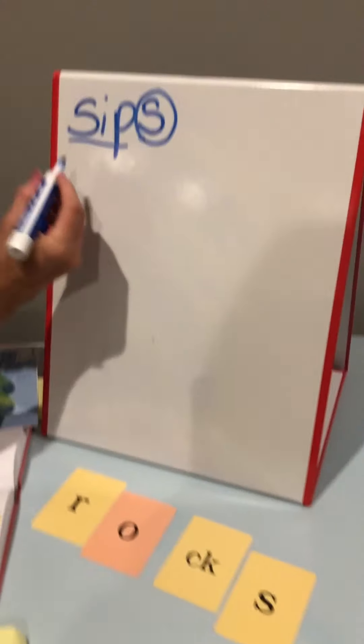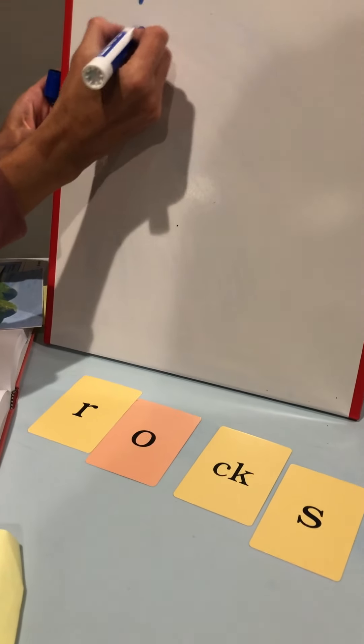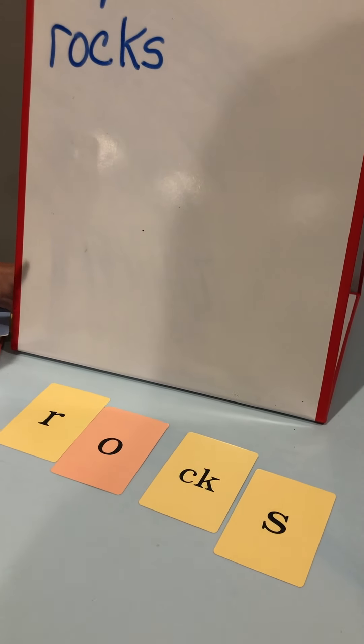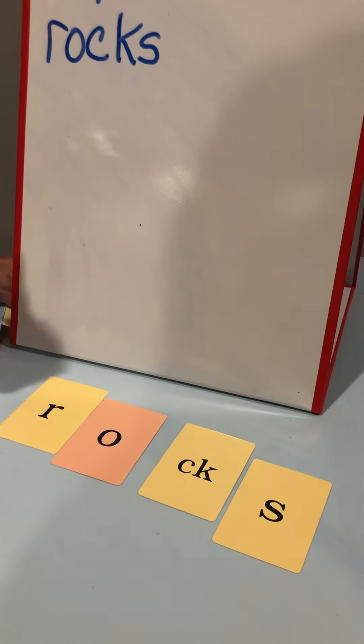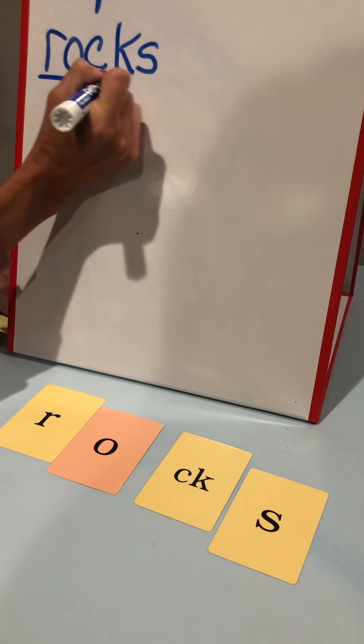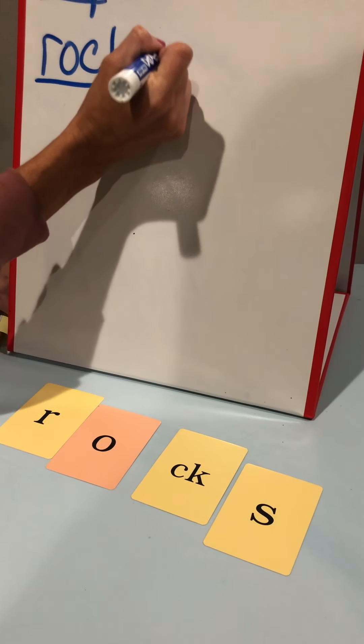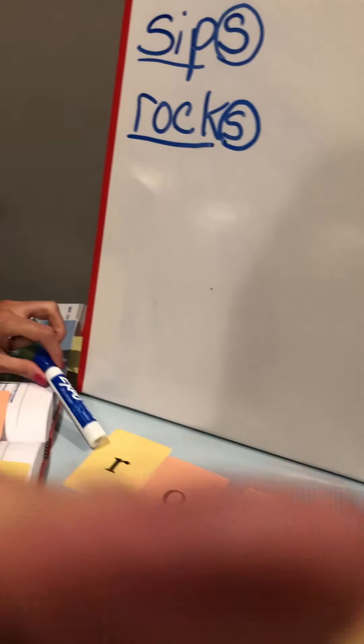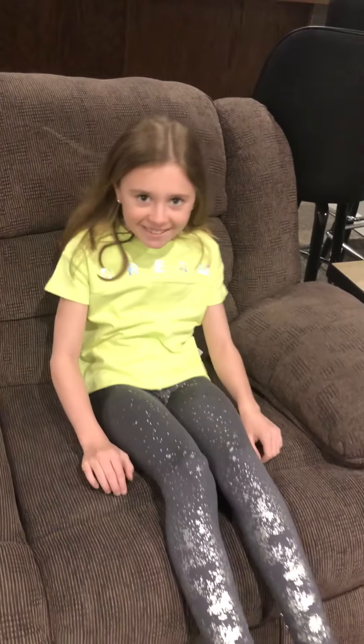Okay, good. On to the next one. Here's our next word. Let's tap it out: rocks. So we're gonna write it up here. Now this one can be used in two ways, but today we're gonna talk about it in the way that makes it the verb. So we underline the base word, we circle the suffix. Our word is rocks, such as she rocks on the chair. Rocks, good.